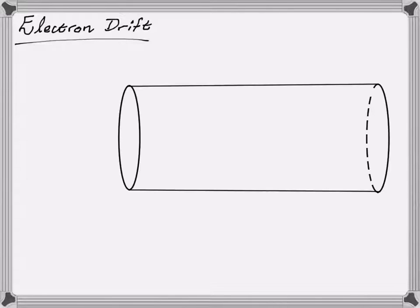This is a screencast on electron drift and how to derive the electron drift velocity. We're going to imagine a conducting wire, but we're going to imagine it as a cylinder full of charge carriers.